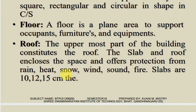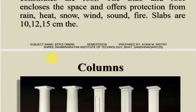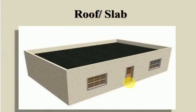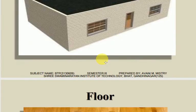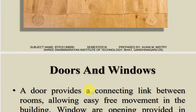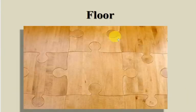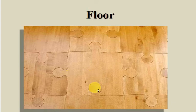Roof protects from sun, rain, wind, sound, and fire. The uppermost part of the building constitutes the roof. The slab and roof encloses the space and offers protection from rain, heat, snow, wind, sound, and fire. Slabs are 10, 12, or 15 cm thick. Types of flooring include mosaic tile flooring, marble flooring, and kota stone flooring, using different materials.